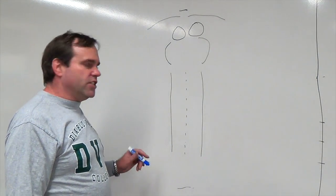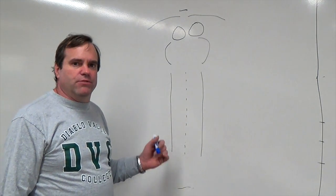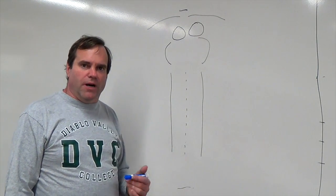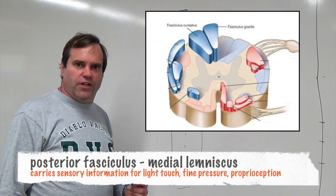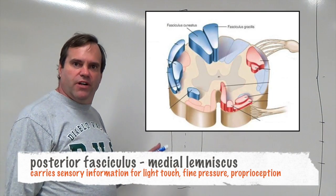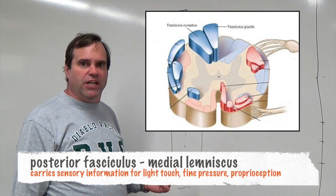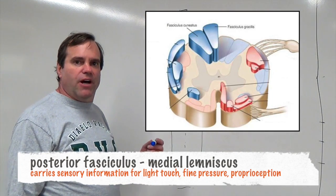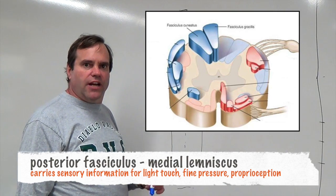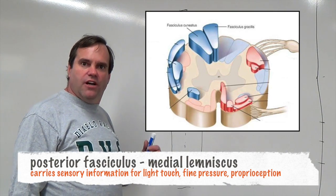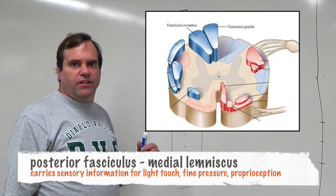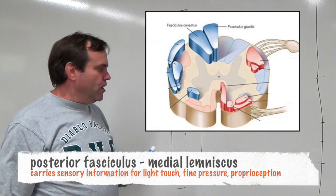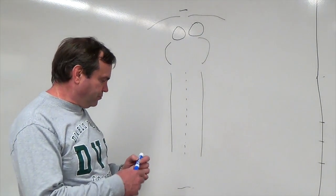With the sensory pathways, we're going to look at two pathways. The first is the posterior funiculus-medial lemniscus, and this pathway carries light touch, fine pressure, and conscious proprioception.